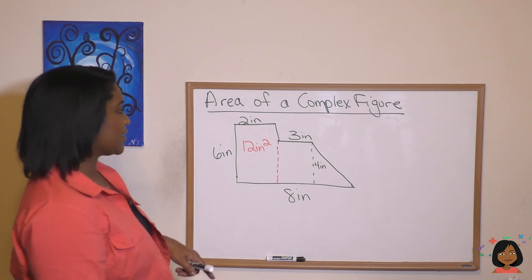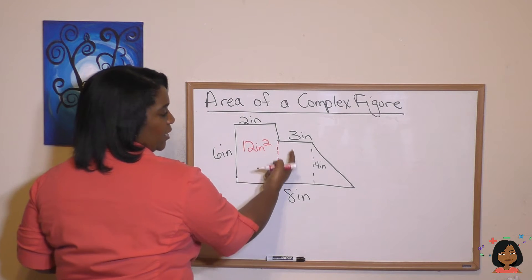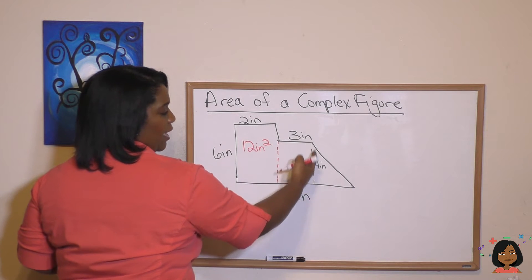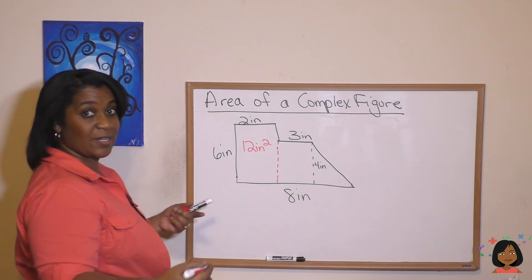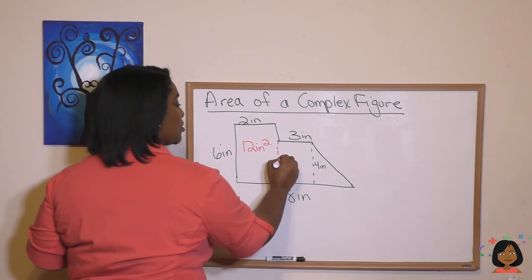I see another rectangle. I see one here. It's got this three and this four. We know that four times three is 12 inches squared.